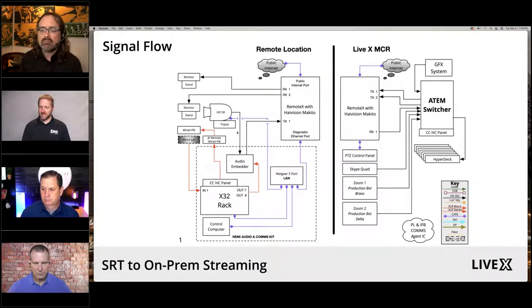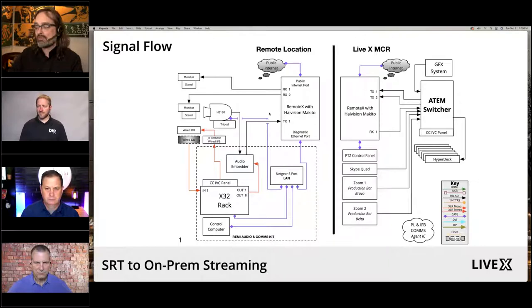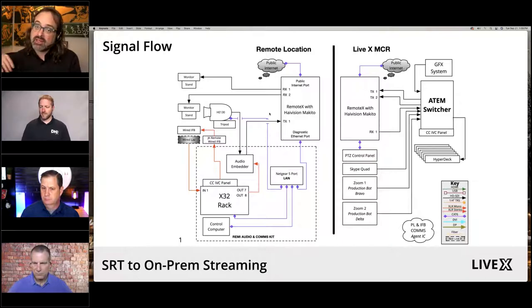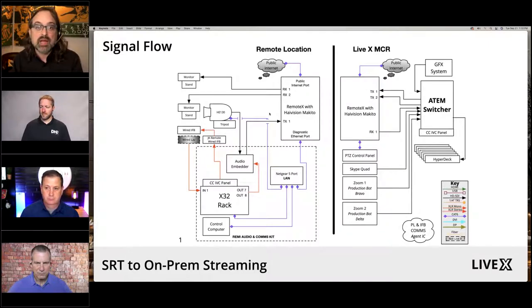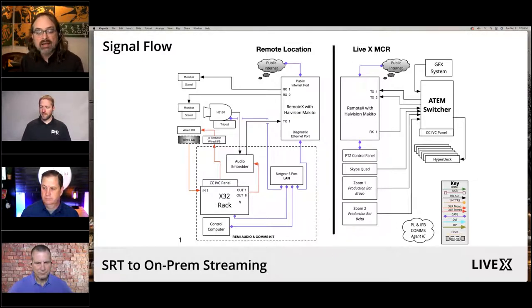Here is our signal flow — it's not actually very complicated. A lot of what we use is Haivision Makitos for a lot of what we deploy. We have a field unit called RemoteX that allows you to send a box, give that box internet, and we can get up to eight encoded audio and video feeds back and forth with multiple channels of audio communications. We had an X32 rack with her audio, a ClearCom panel so we could talk back to her, a wired lav, a monitor, and a stand.